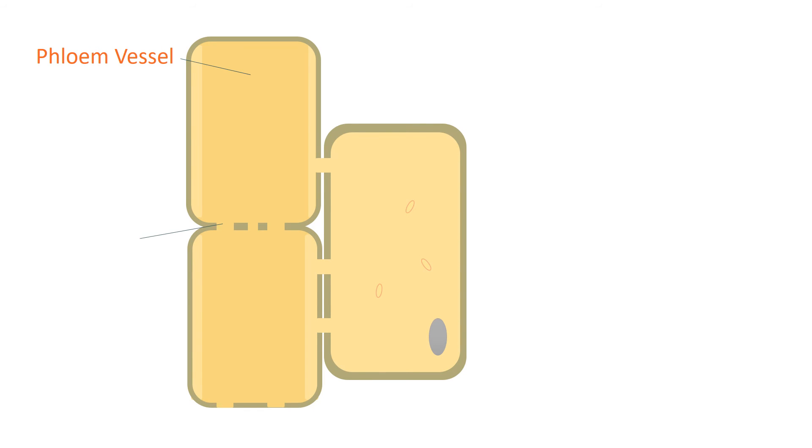To do this they have sieve plates between neighboring cells which allows water to move freely between them. They have relatively few organelles inside and so are kept alive by companion cells which are packed full of mitochondria. These also help to transfer the energy required to move dissolved food up and down the plant.